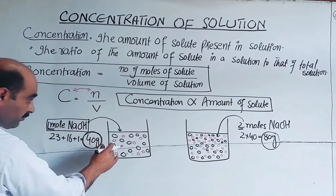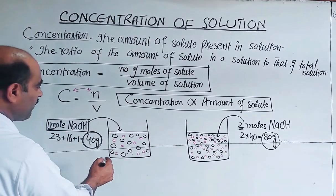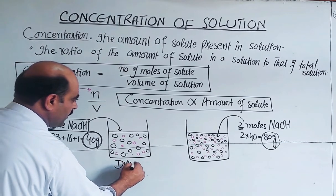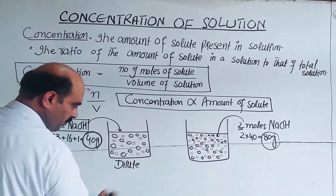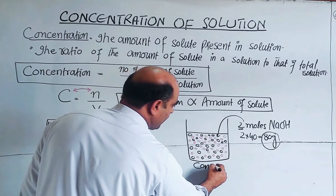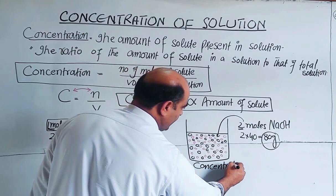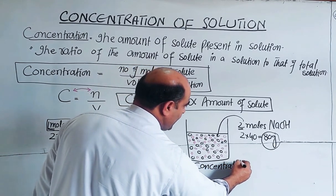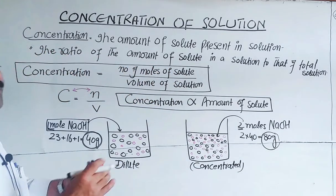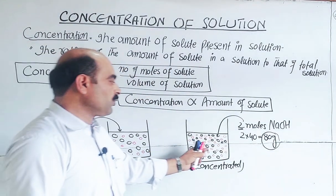So if you look at the number of moles — if the number of moles is less, then the solution is dilute. When the number of moles is more, you will likely have a concentrated solution. And when you consider it dilute or concentrated, you will have a comparison to introduce. So let us consider one solution and compare it to another.